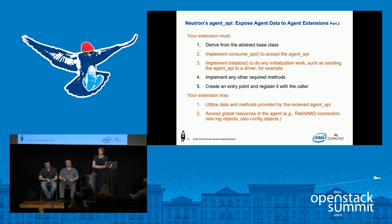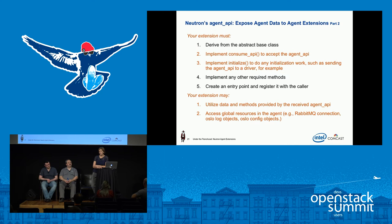The interface for the extension has changed with the introduction of the agent API concept. It now needs to implement two further methods. The consume_api method enables the extension to receive and keep the agent API — not the agent information itself, but a mechanism by which it can access that information. Then it needs to implement the initialize method, which allows it to do anything it wants, but often involves doing something with the agent API.